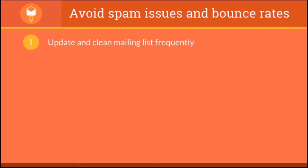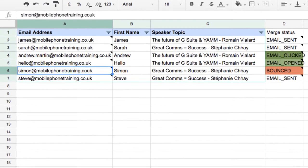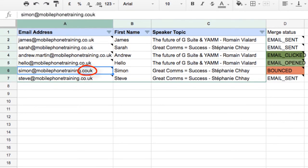Here are some tips about how to avoid spam issues and reduce your bounce rates. You want to update and clean your mailing list frequently. Check for typos in the email address or invalid email addresses. YAM will help you too — whenever you get an email that has bounced, it'll be marked as a bounced email inside your spreadsheet.